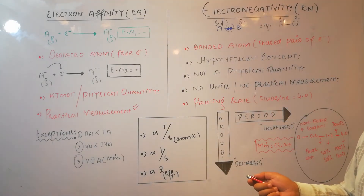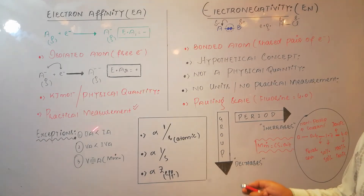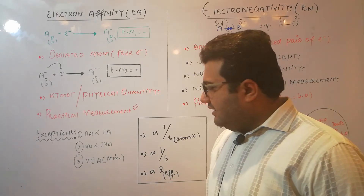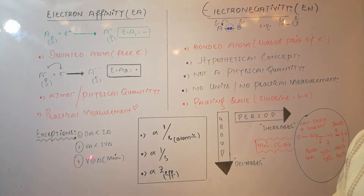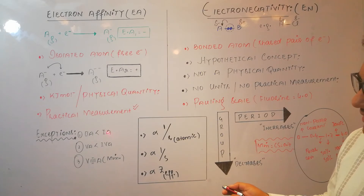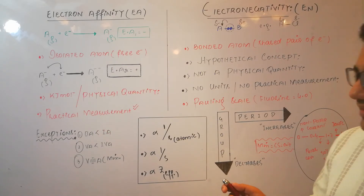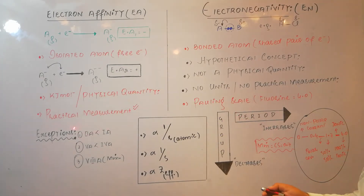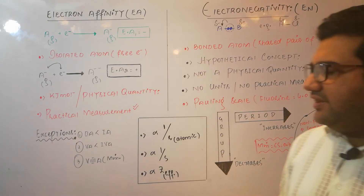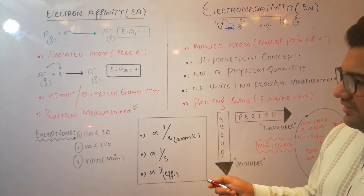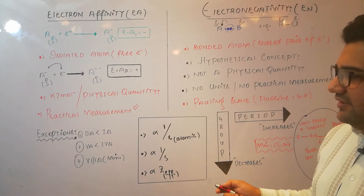Just like ionization energy, there are certain exceptions in electron affinity. The electron affinity of group 2A is less than that of group 1A. According to the normal trend, moving left to right across a period the electron affinity should increase, so 2A should have greater electron affinity than 1A. But this is an exception — 2A has lesser electron affinity than 1A.